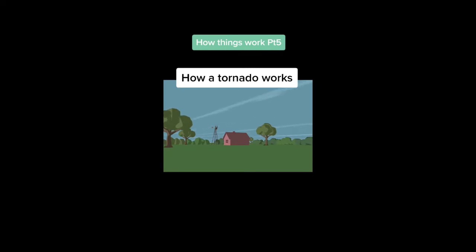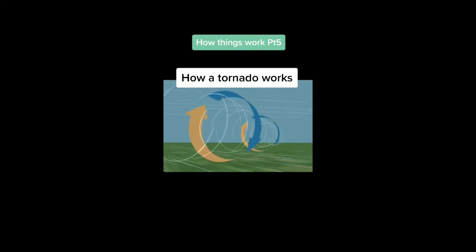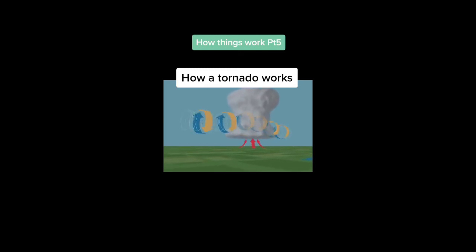If the background level is blowing in one direction, and wind higher up in the atmosphere blows in a different direction, it can cause a horizontal tube of air to form. In a thunderstorm, warm air rises up within the storm. This is called an updraft. An updraft can turn a horizontal rotating tube of air into a vertical one. When this happens, the whole storm begins rotating, creating a supercell. Some supercells form a funnel cloud. And if that funnel cloud extends to the ground, it's called a tornado.